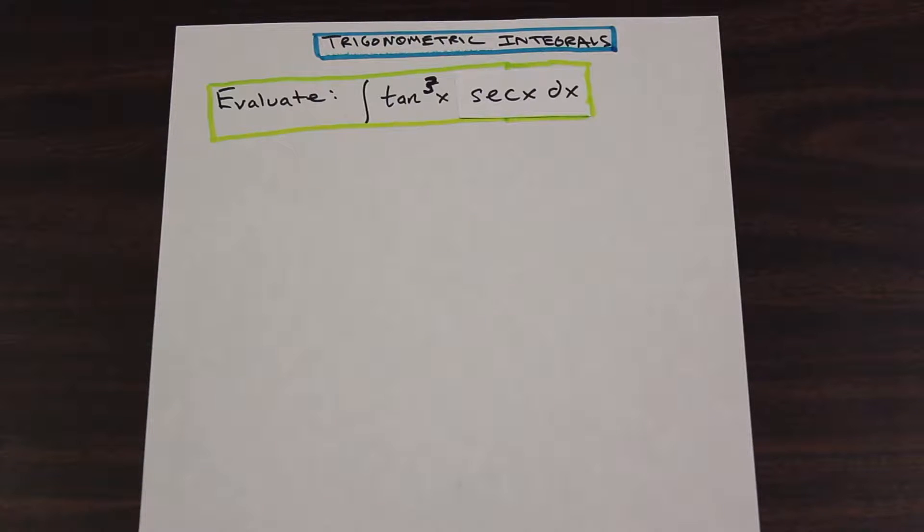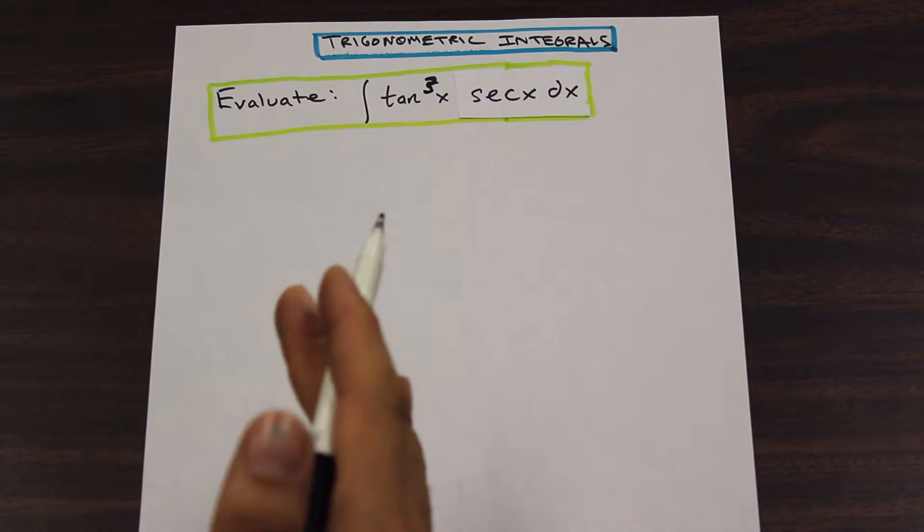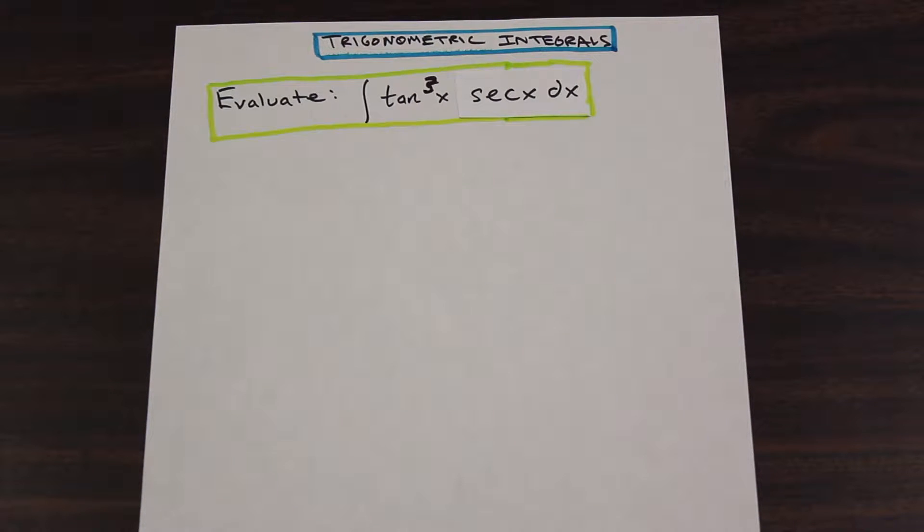And once we're left with an even function of tan, we're going to express that as secant squared x minus 1. So let's go ahead and start. It's important, like I said before, to do a lot of different problems with all different types of powers. Last video we did sine cos, this one we're doing tan secant. We're going to show you a couple tricks, but the best way to do it is to practice.